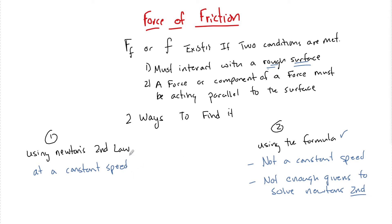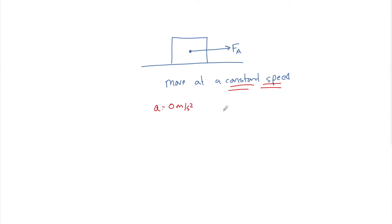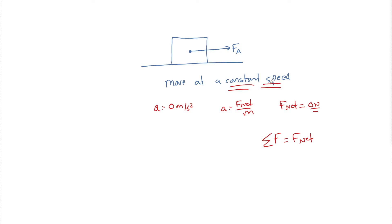Let me tell you how to find the force of friction using Newton's second law. If I have some applied force on a box and that applied force is making the box move at a constant speed, there are things we know implied about that constant speed. If speed is constant, the acceleration of the object is zero meters per second squared. Using Newton's second law as F_net over m, I can say that F_net on this object is also equal to zero newtons.